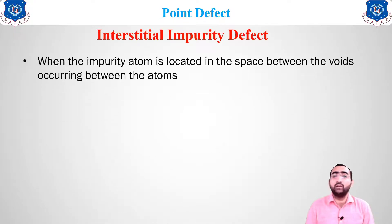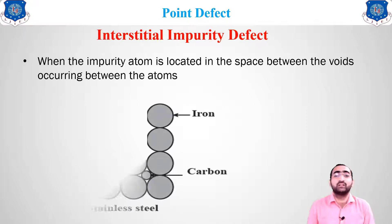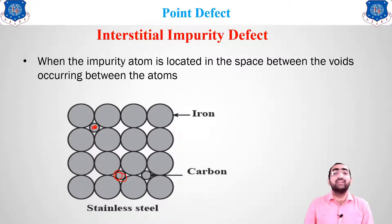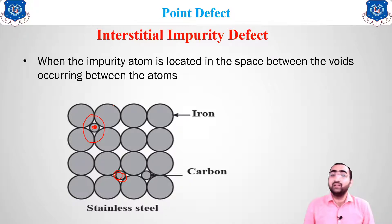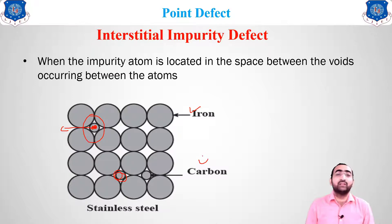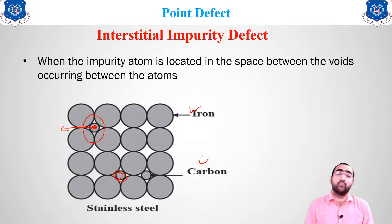There is another type — interstitial impurity defect. When an impurity atom is located in the space between atoms, that is known as interstitial impurity. The impurity atom is very small and settles in the spaces left between the larger atoms. An example is stainless steel: iron is present, carbon is the impurity, and the carbon settles in the space left by the iron atoms.